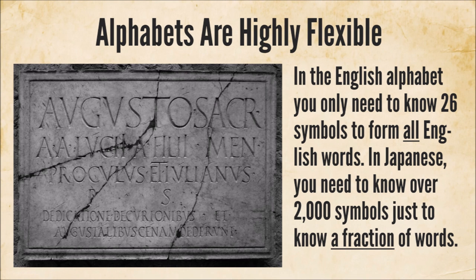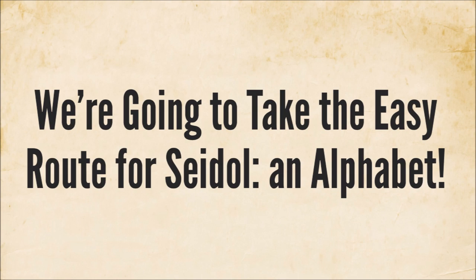The basic idea of an alphabet is one symbol, one sound. To be considered proficient in Japanese, one needs to know about 2,000 kanji symbols. In each of the syllabaries in Japanese, there are 68 characters, and there are two different syllabaries in that language. However, in the English alphabet, you only have 26 symbols to remember. For most languages that use alphabets, they're phonetic — pronounced more or less the way they're written. So to make things easy, we're going to choose an alphabet form for our fictional language Seydal. It's the easiest and most straightforward.